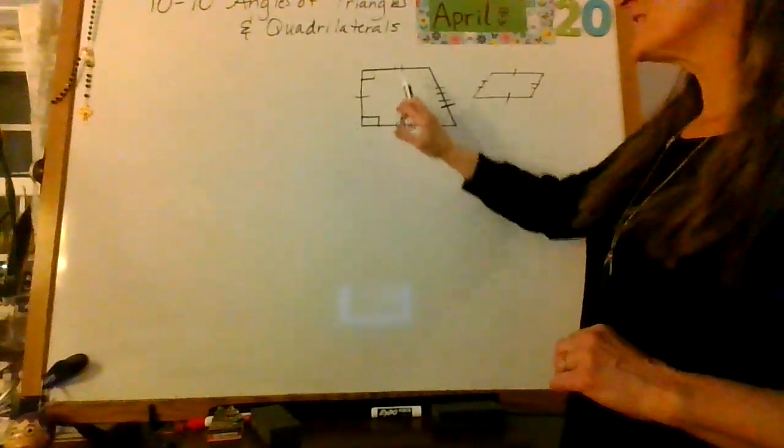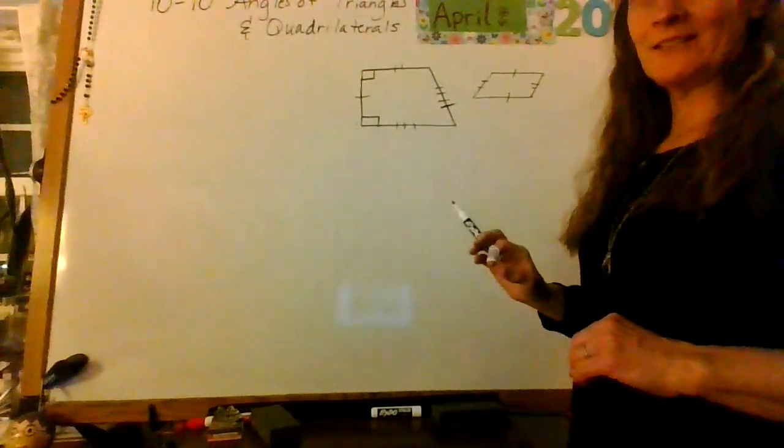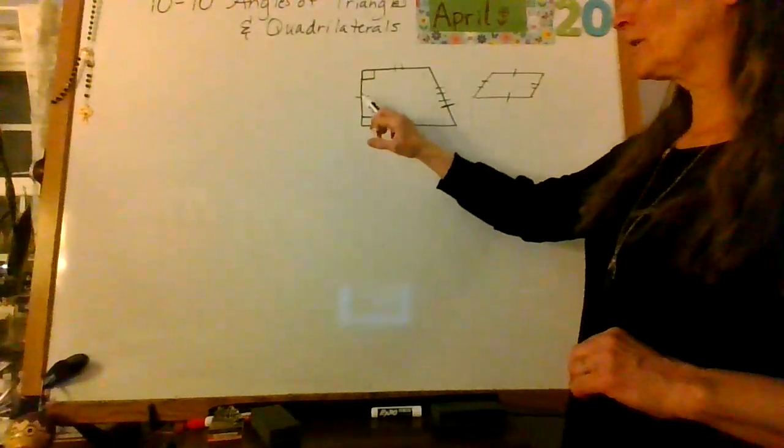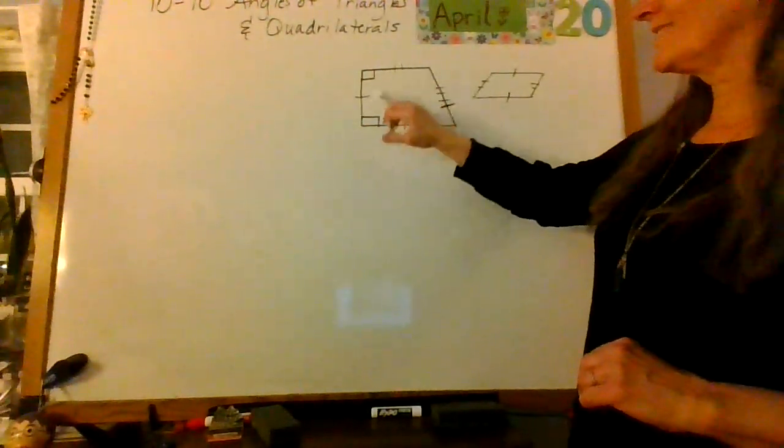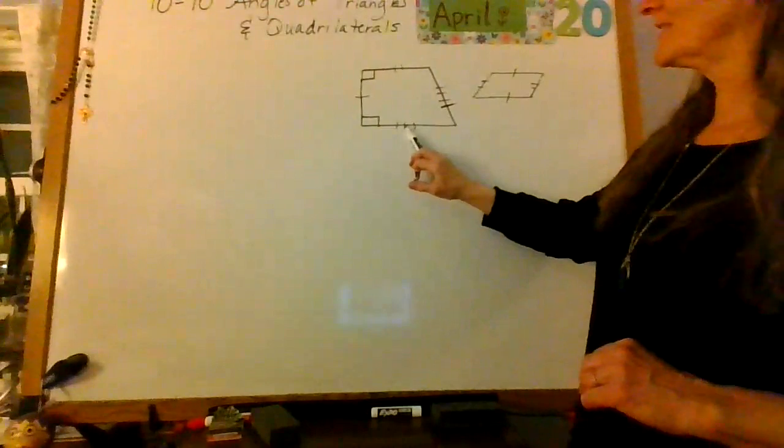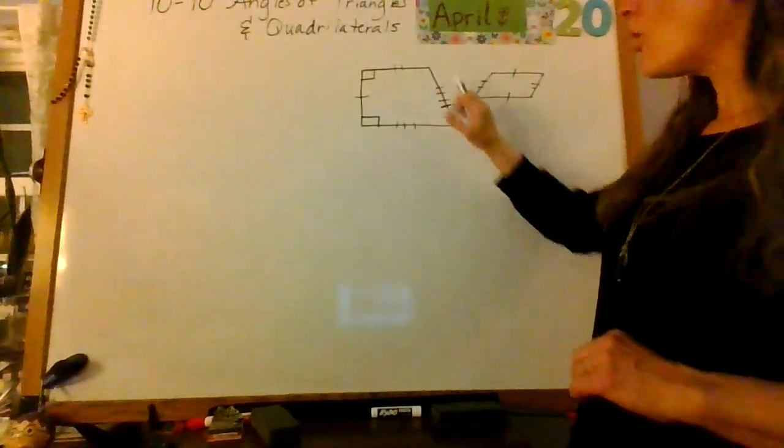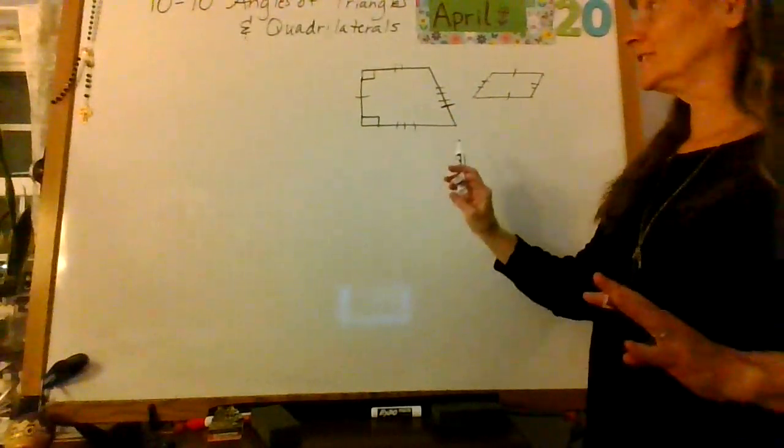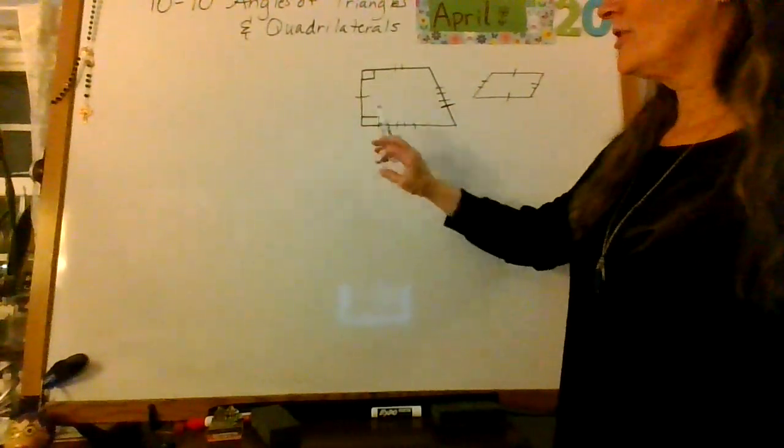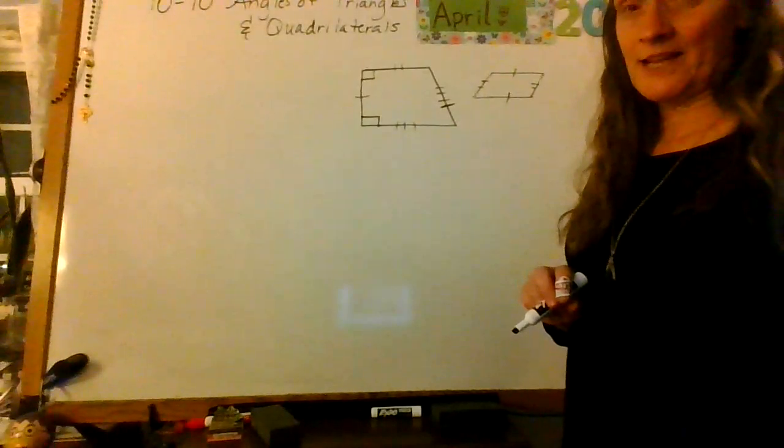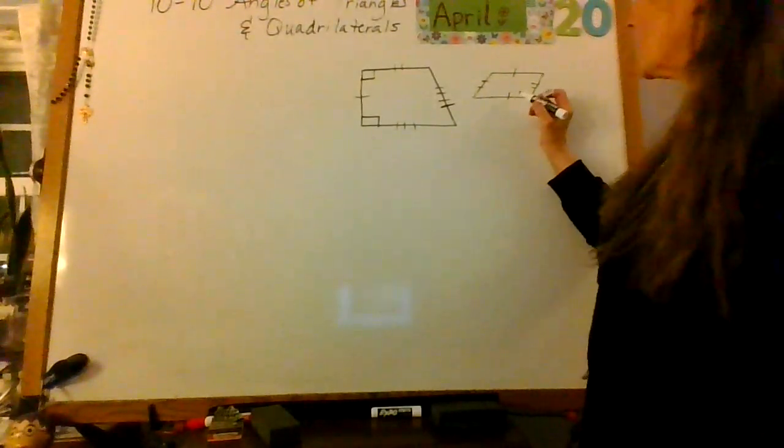This has three different side lengths, so they're all different hash marks. One, this isn't the same, so I have to do a second one. This isn't the same as either one of those. There's three. This is also different, so all four of those are different lengths. However, look, those two angles are the same.